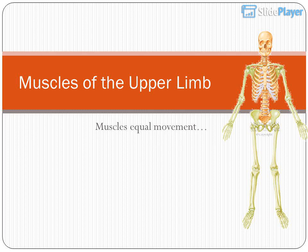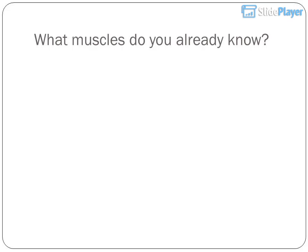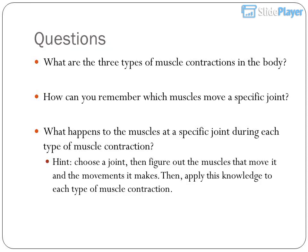Muscles of the upper limb. Muscles equal movement. What muscles do you already know? Questions: What are the three types of muscle contractions in the body? How can you remember which muscles move a specific joint? What happens to the muscles at a specific joint during each type of muscle contraction?